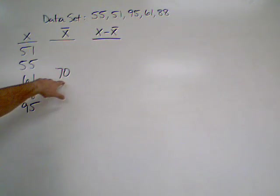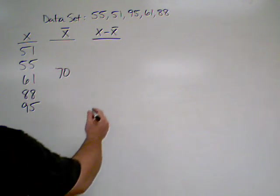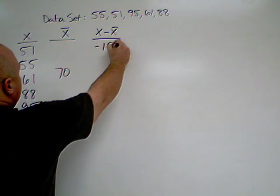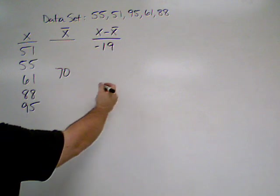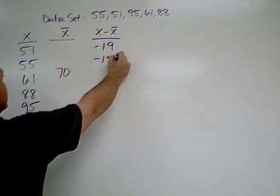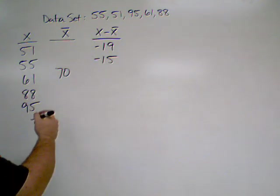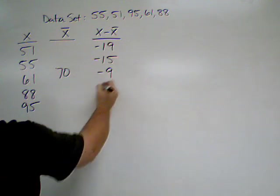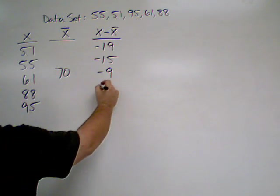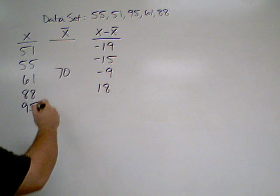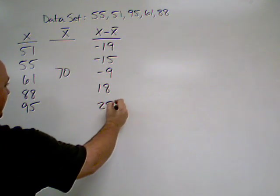We're going to subtract our mean from our data set. So, 70 from 51 is going to give us a negative 19. 55 minus 70 is negative 15. 61 minus 70 is negative 9. 88 minus 70 is 18. And 95 minus 70 is 25.